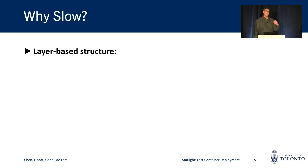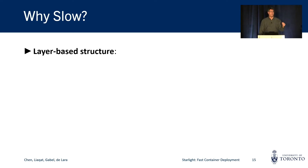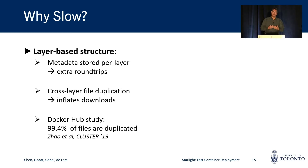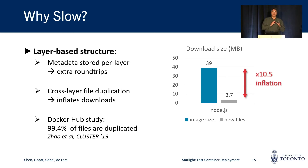A second issue is the layer-based structure of containers. Since container images are simply a stack of layers, the metadata for each file is stored in the compressed layers. Approaches like eStarGZ that want to start containers early need to make additional requests to fetch the metadata for each and every layer, resulting in extra round trips. Additionally, even a small change to the metadata of a file requires duplicating the entire file in a later layer, meaning there is a lot of inflation when we deploy container images. For example, to update Node.js to a later version, we would have to download a container image that is 39 megabytes in size — excluding duplicated layers — even though only 3.7 megabytes of files are actually new.